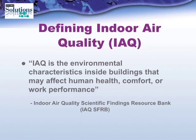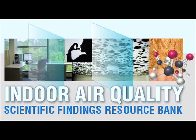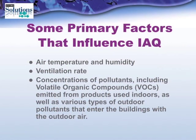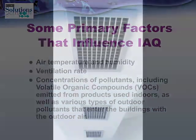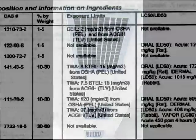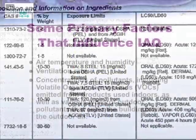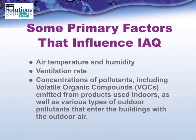Let's define indoor air quality — IAQ. IAQ is defined as the environmental characteristics inside buildings that may affect human health, comfort, or work performance, as brought to us by the Indoor Air Quality Scientific Findings Resource Bank, the IAQ SFRB. Some primary factors that influence IAQ include indoor air temperature and humidity, the ventilation rate, and the concentrations of pollutants — including volatile organic compounds or VOCs — emitted from products used indoors, as well as outdoor pollutants that enter the building.